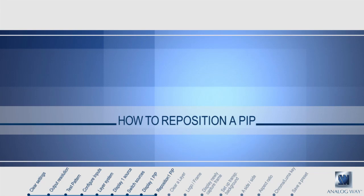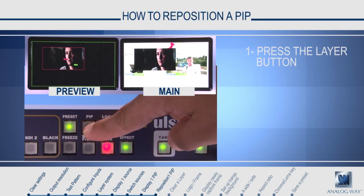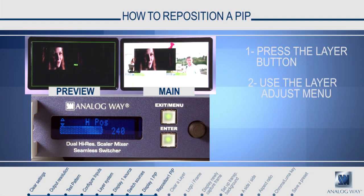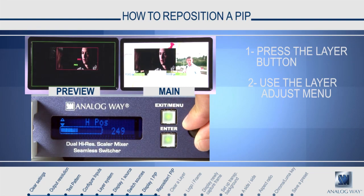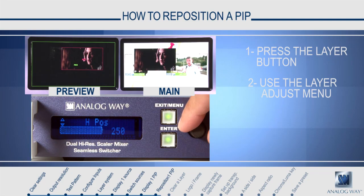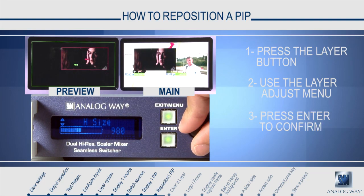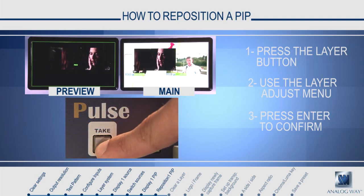How to reposition or resize the layer. First, select the layer you wish to edit. You will see the layer menu appear. Select layer adjust, and you will find all the parameters for the position and size of the layer. Make some adjustments and press enter to confirm your changes. When you are finished, press the take button to see your changes appear on the main program screen.